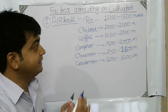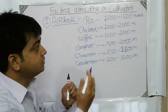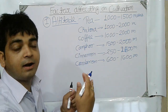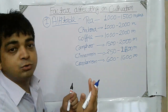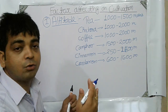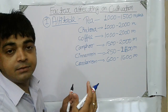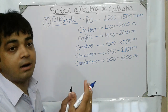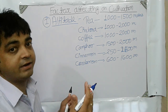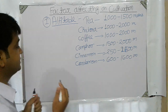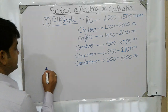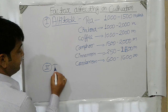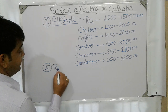Below or above the required altitude range, a medicinal plant is not able to grow well, or if it does grow, the quality and nature of the chemical content will be affected. The second factor which is important is temperature.